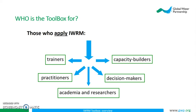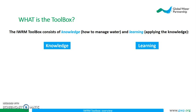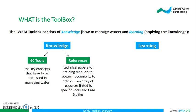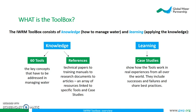So now we can move on to what the Toolbox is. It consists of two parts: knowledge and learning. The GWP Toolbox provides knowledge on how to manage water through two means — tools and references. The first part of this section contains 60 tools which cover the crucial components of managing water. The second part consists of references, which range from technical papers to training manuals. To actually apply the water management knowledge, the Toolbox also helps with learning, done through case studies which help demonstrate to users how tools and references have been used all over the world.